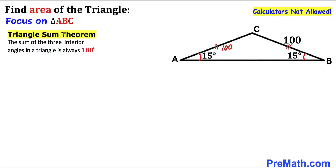Now let's recall the triangle sum theorem. The sum of the three interior angles in a triangle is always equal to 180 degrees. So in triangle ABC, if angle ABC is 15 degrees and angle BAC is 15 degrees, then angle ACB is going to be 150 degrees.